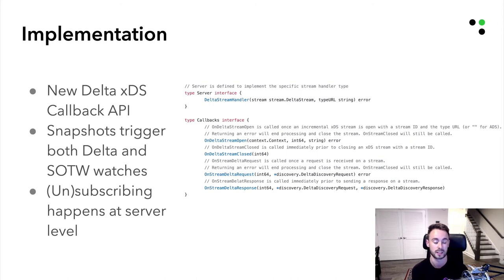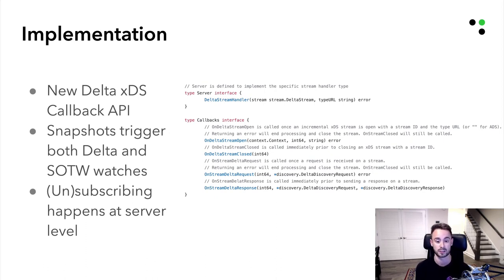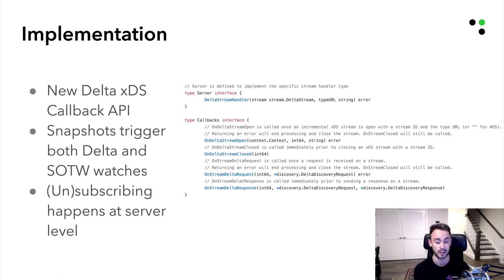With this new implementation, you don't actually have to change the way you set snapshots or create watches. There is a new CreateDeltaWatch function defined in the snapshot cache interface, but that isn't needed unless you're implementing your own version of the server — if you're using Go Control Plane's implementation, that's all taken care of for you. These callbacks are simply defined because we couldn't reuse the pre-existing State of the World discovery request-response objects. We needed something compartmentalized because you could have scenarios where certain clients are in State of the World mode but others are in delta mode — sharing the same resource pool but receiving items differently. So you can have your State of the World callbacks as well as your delta callbacks and treat the functionality differently.